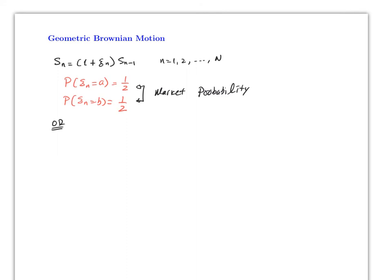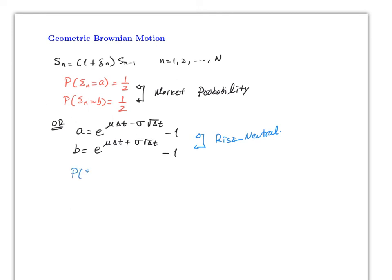We also had a = e^(μΔt − σ√Δt) − 1 and b = e^(μΔt + σ√Δt) − 1. These gave the risk-neutral or martingale probabilities, where q = P(C_n = b) = (e^(rΔt) − 1 + a) / (b − a) and P(C_n = a) = 1 − q.